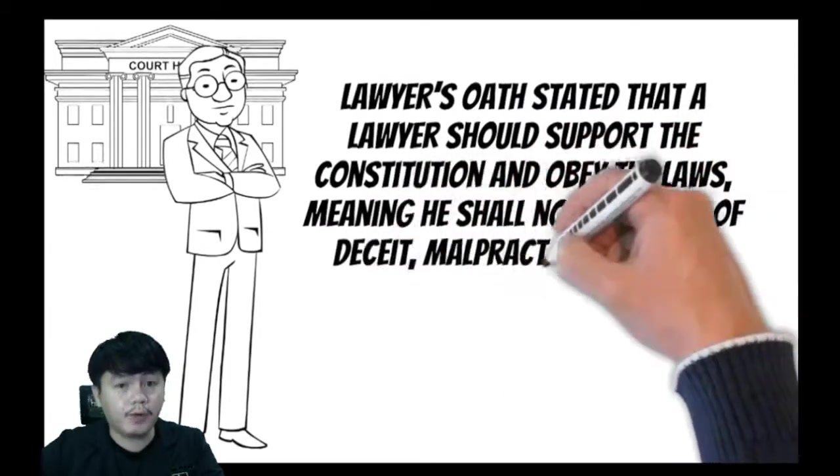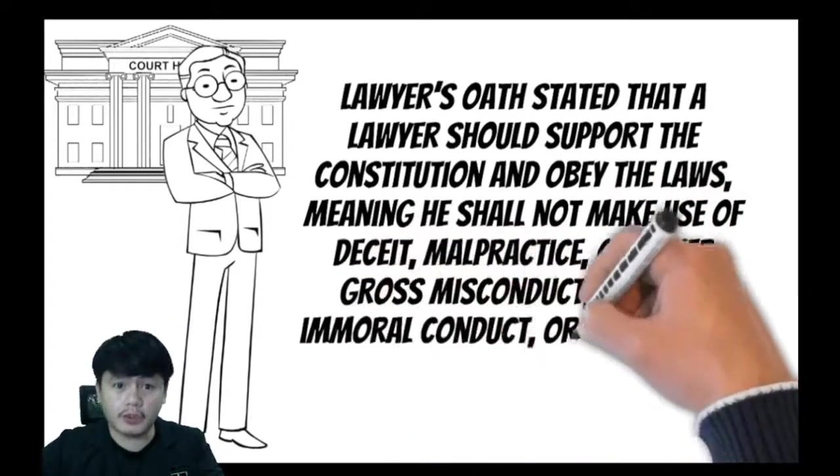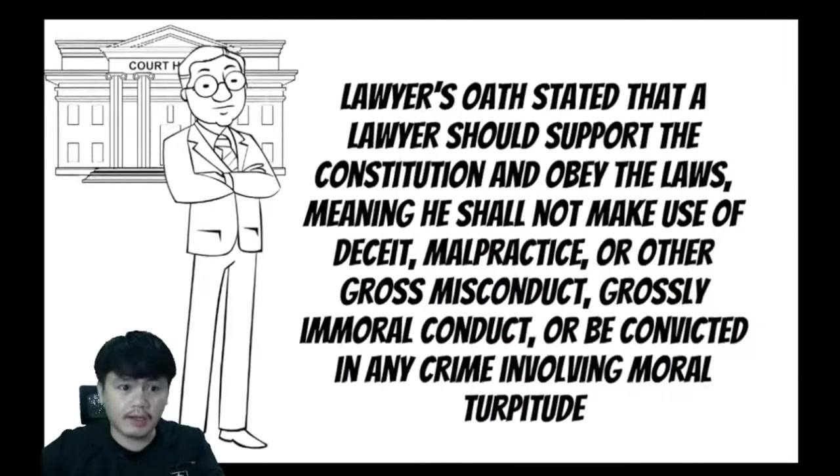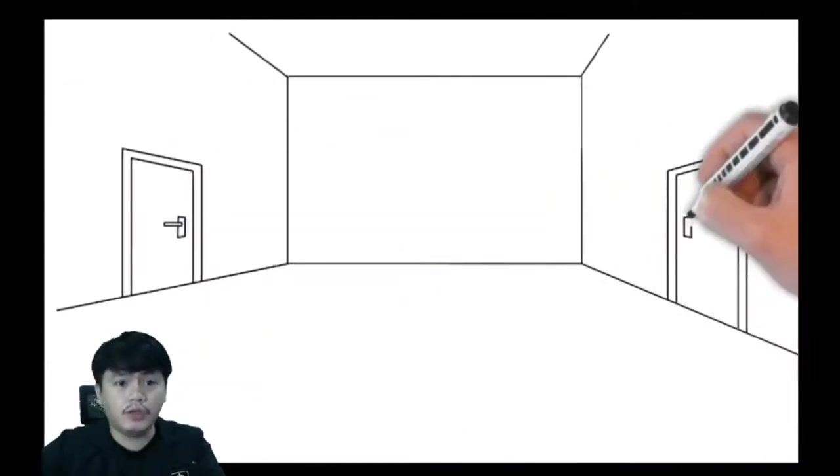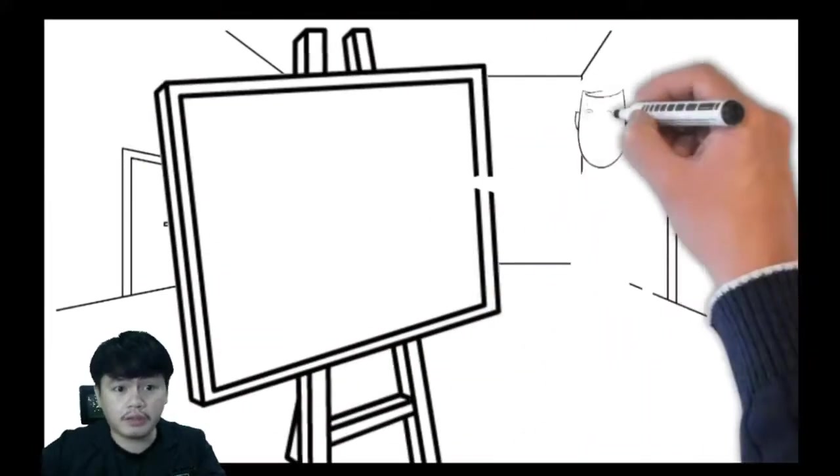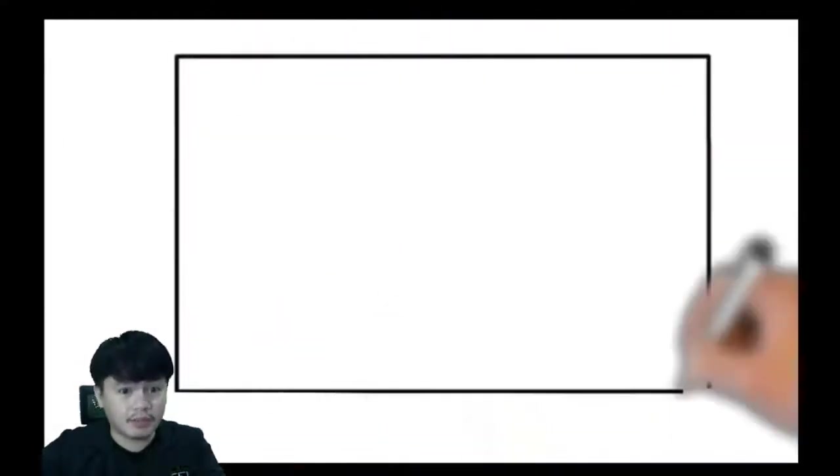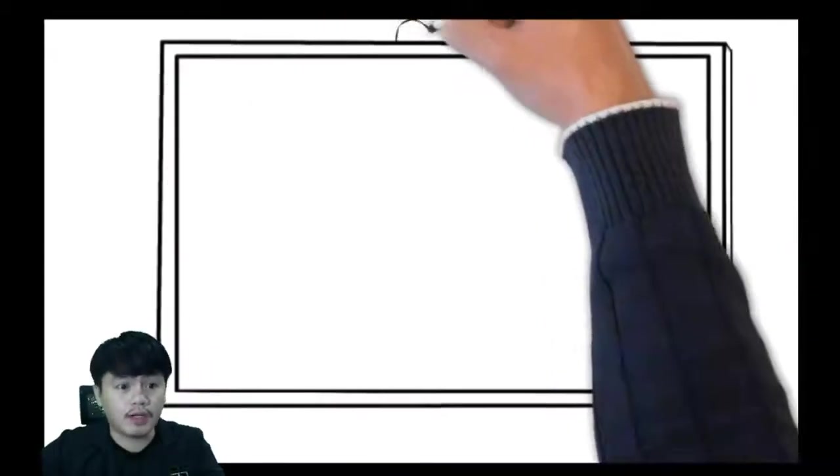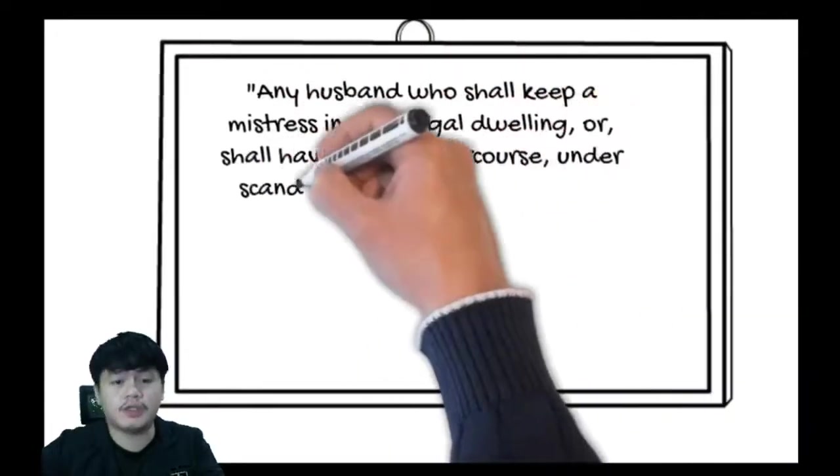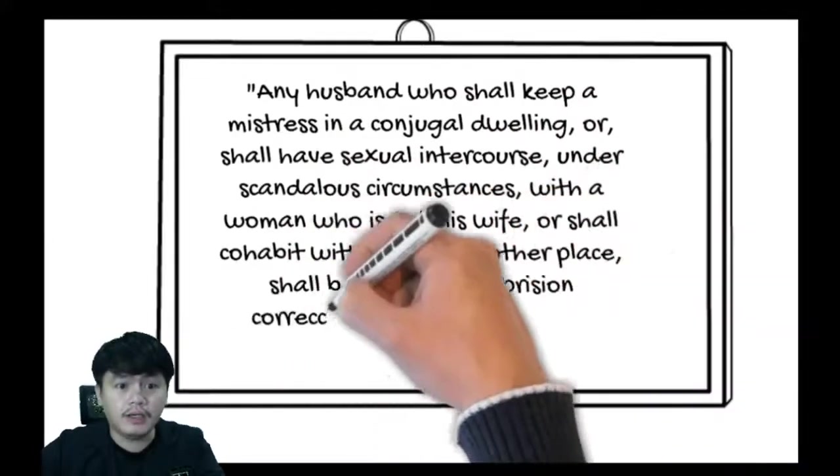In this case, Guevara versus Iyala, attorney Iyala was accused of concubinage under Article 334 of the Revised Penal Code, which states that any husband who shall keep a mistress in a conjugal dwelling or shall have sexual intercourse under scandalous circumstances with a woman who is not his wife, or shall cohabit with her in any other place, shall be punished by prison correctional in its minimum and medium period.